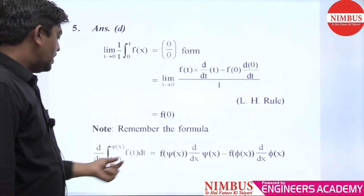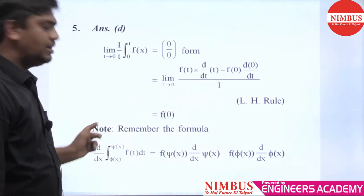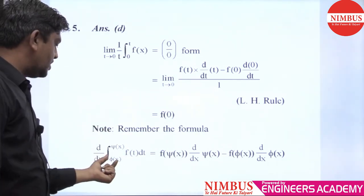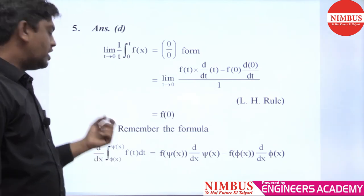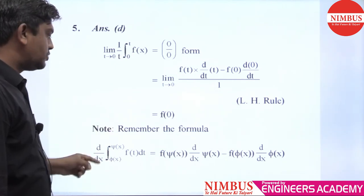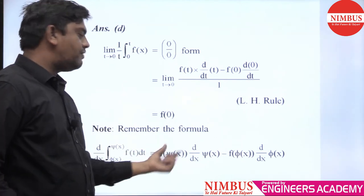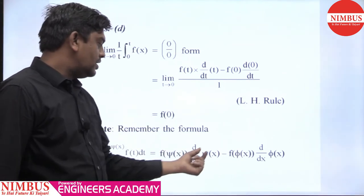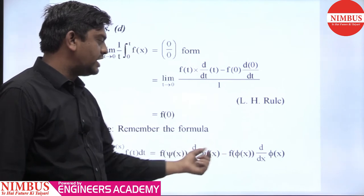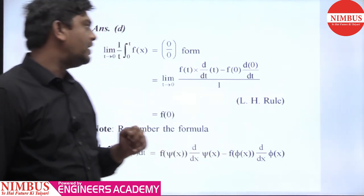The Leibniz rule states that if we have integration of f(t) with limits from lower limit phi of x to upper limit psi of x, and if we take derivative with respect to x, then the formula is f of psi times derivative of psi minus f of phi times derivative of phi.